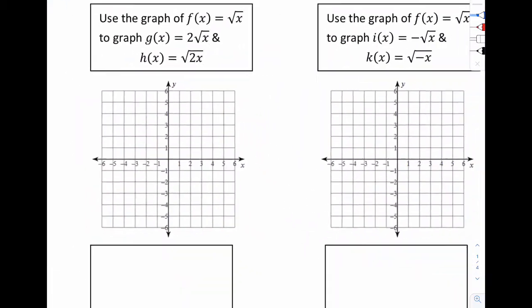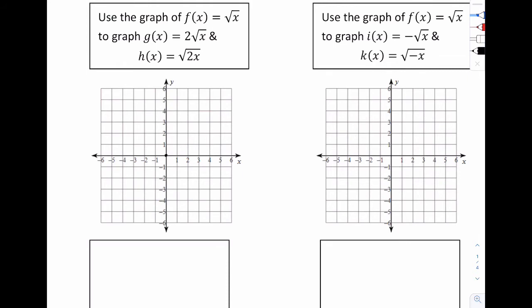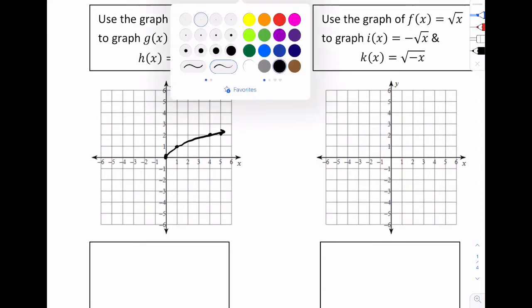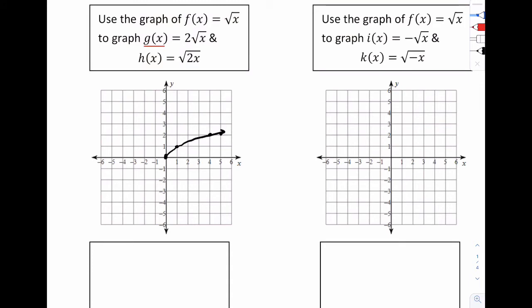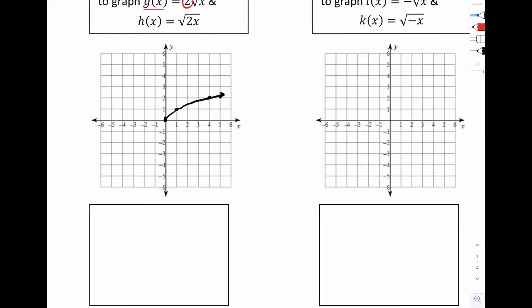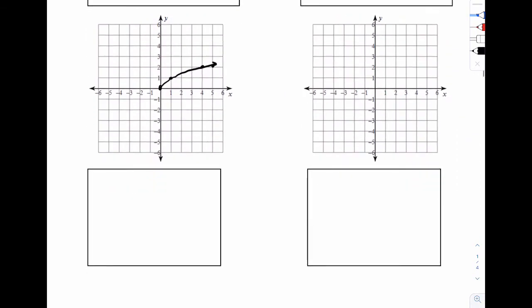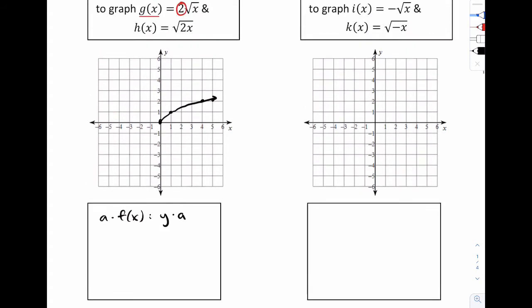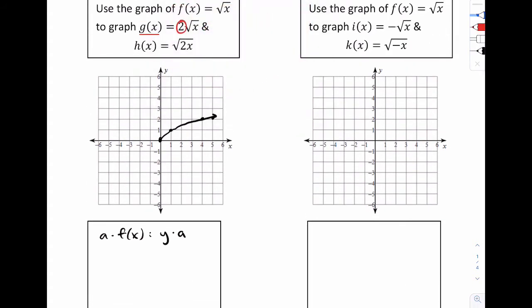So now let's go to the next one. Use the graph of root x to define these graphs. So root x, let's do our standard right there. This is from the last video. That's our parent graph. Now it says graph 2 root x and the root of 2x. So for this one, let's do g(x) in red. What's happening is this 2 is on the outside. So what that does is it's actually going to affect the y values. So think of the y values as like the whole function. And x values are like what's inside the function.